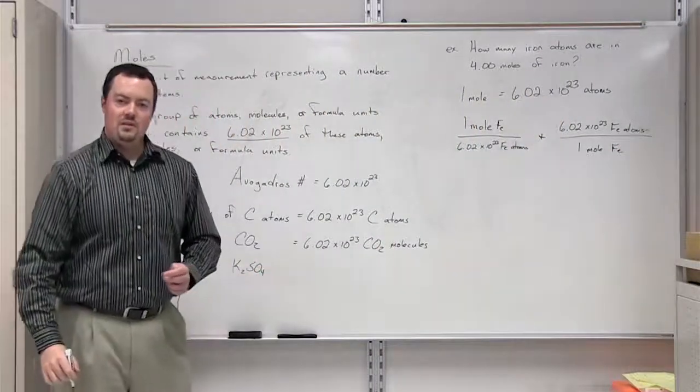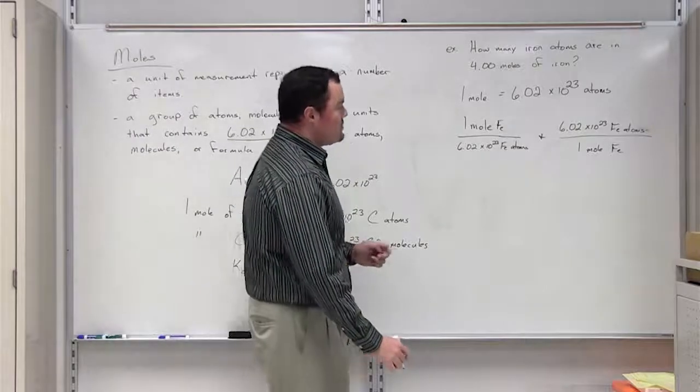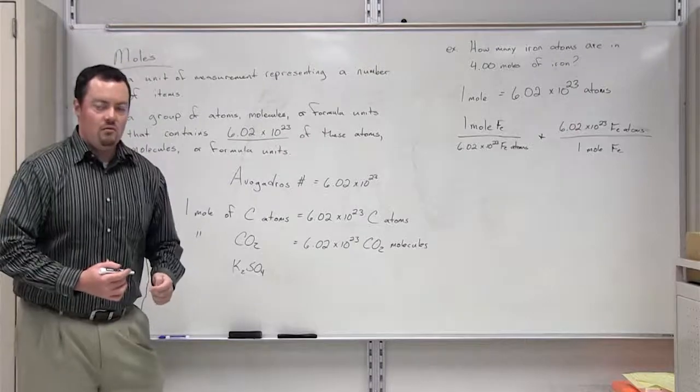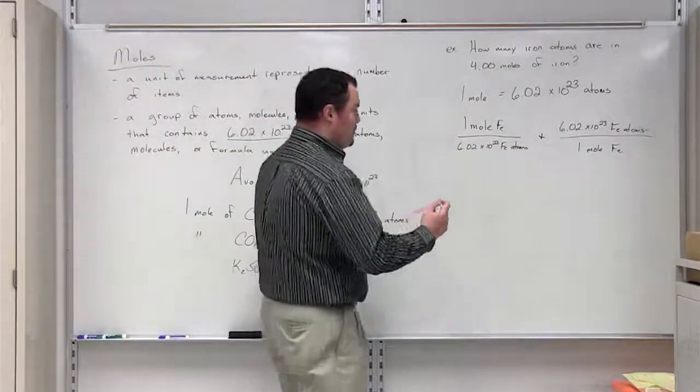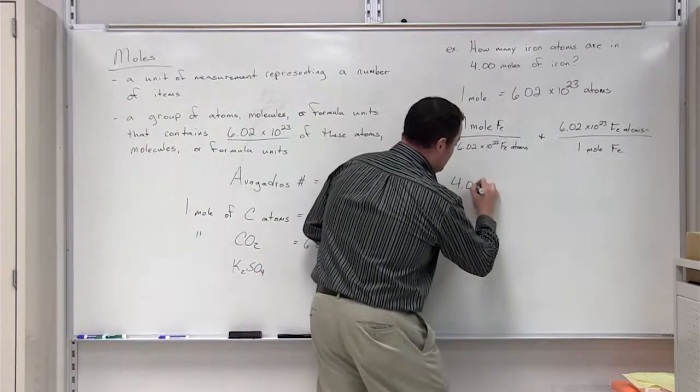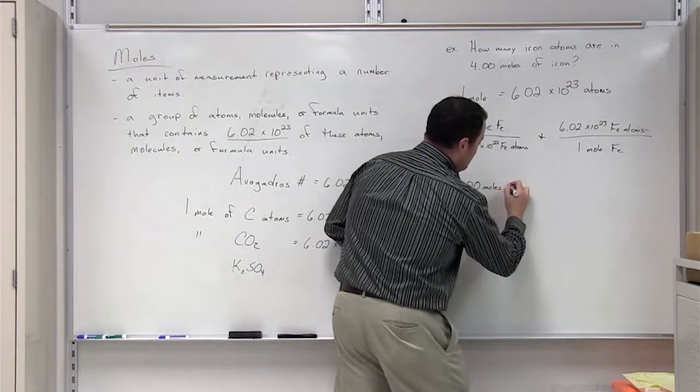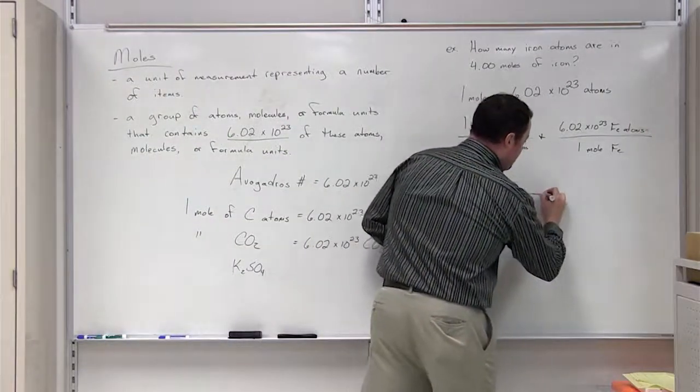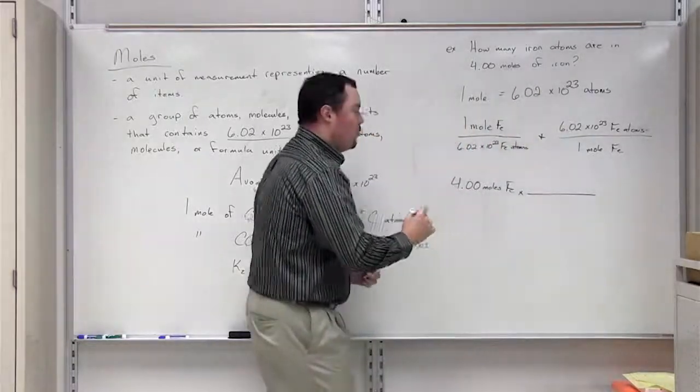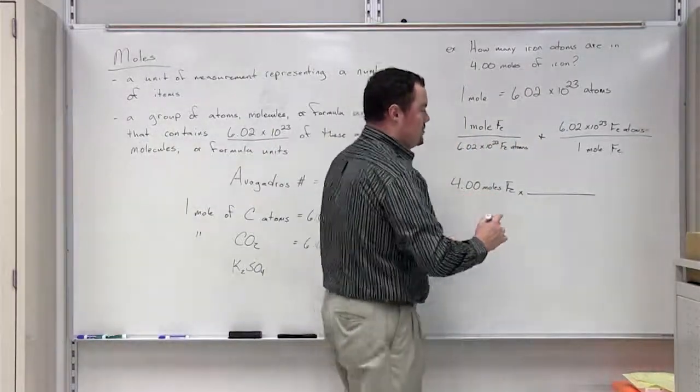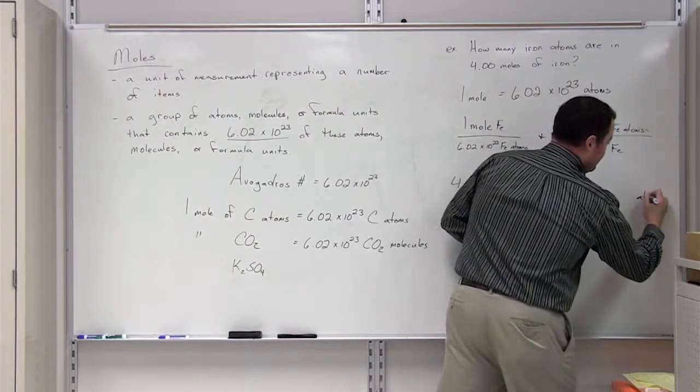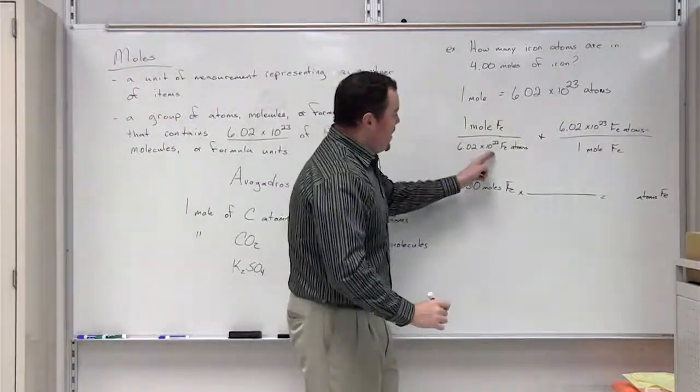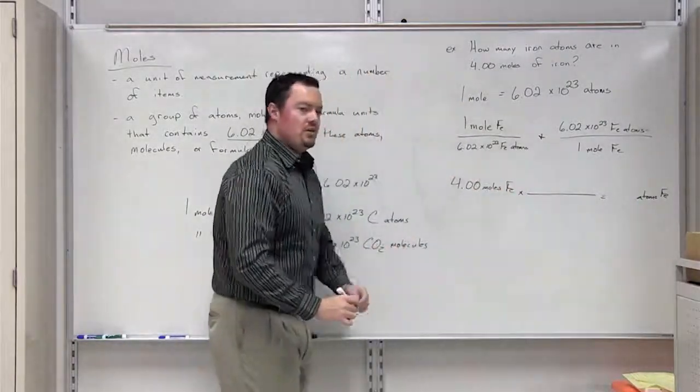Now we are ready to set up our conversion. In order to set up your conversion, you are first going to determine what value is the problem giving you that it wants you to convert to a different unit. In this case, it's giving us 4 moles of iron. Now we need to pick a conversion factor that will allow us to convert from moles to number of atoms of iron. We have either of these conversion factors here to choose from.